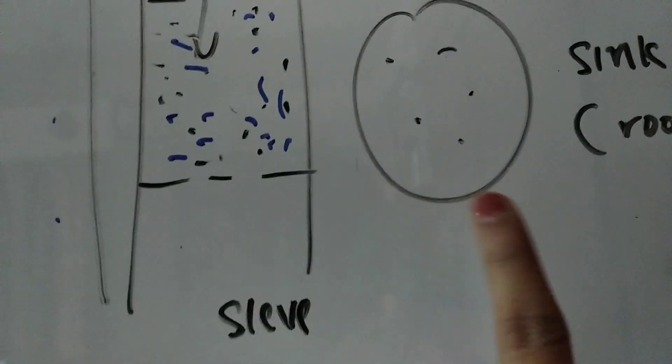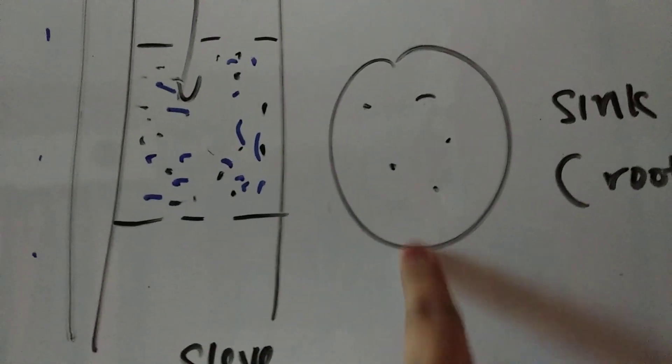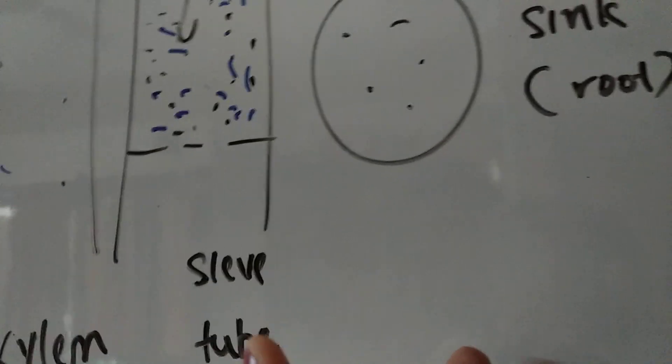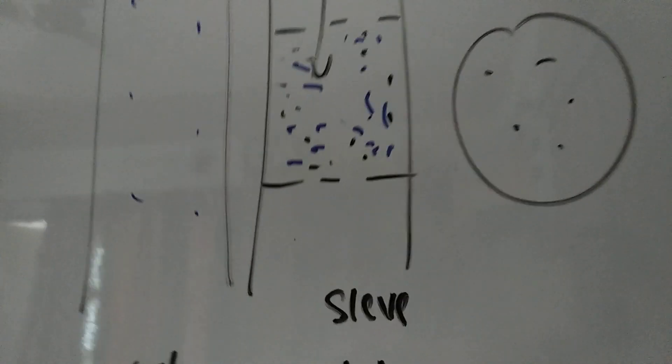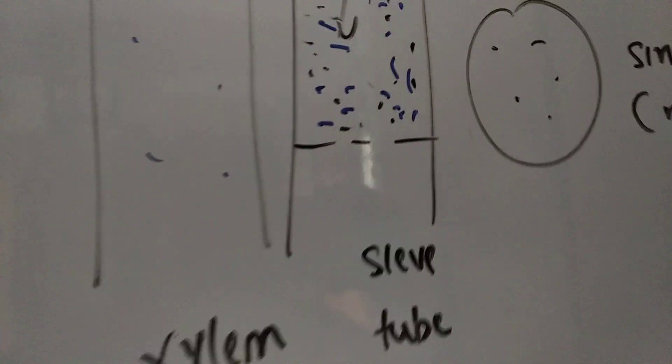Since it's a dilute solution, if you look concentration-wise, this has a higher concentration. This doesn't even have water - it only has solutes. And this has so much water. Even though it has more solutes, concentration doesn't depend on total amount of solutes. It depends on solutes per unit liter.